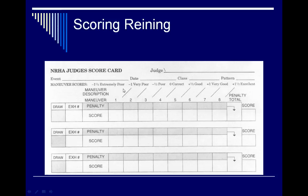The dashed lines on the scorecard represent the various maneuver scores. When you decide what the reining pattern is, you write abbreviations for the various maneuvers on these dashed lines — it might be circles to the left, circles to the right, stop and back, and so on. The box for score goes with the maneuver score, and maneuvers are assessed only on the quality of each group of maneuvers.